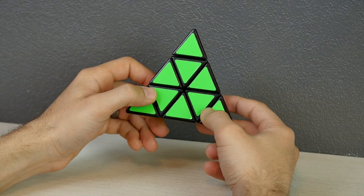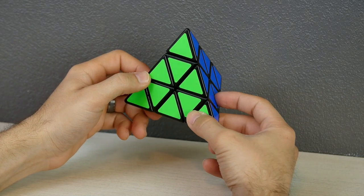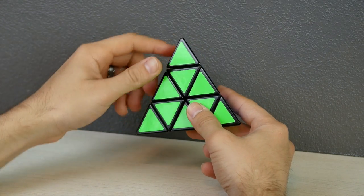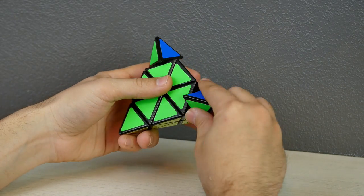A quick note: in order to do the checkerboard pattern on the Pyraminx, you need to be able to take off the tips so that we could rearrange them later to finish the pattern.